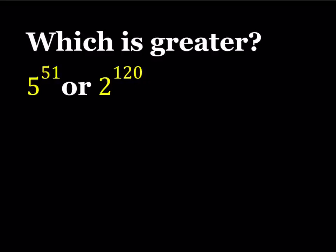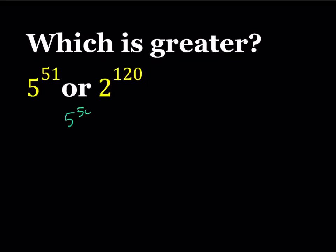probably some of you are thinking about the following. How about I take 5 to the power 50 and compare it to 2 to the power 120. Why? Because their exponents have a common factor, which is 10. So if I'm able to compare 5 to the 5th and 2 to the power 12, then I should be able to raise both of these numbers to the 10th power because the order is not going to change.